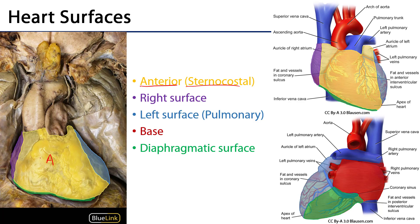That anterior surface is flanked on the right side by the right surface, and on the left side by the left surface, oftentimes called the pulmonary surface because it is in contact with the left lung. Make no mistake, the right surface is also in contact with the pleura surrounding the right lung.